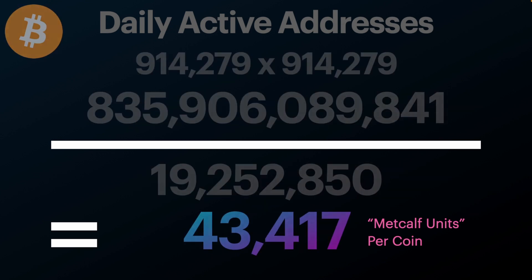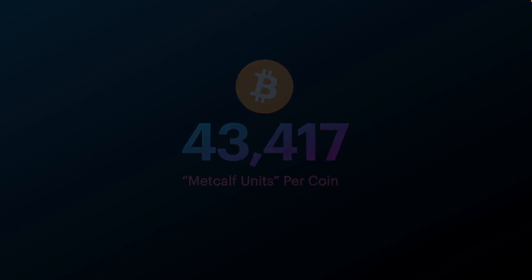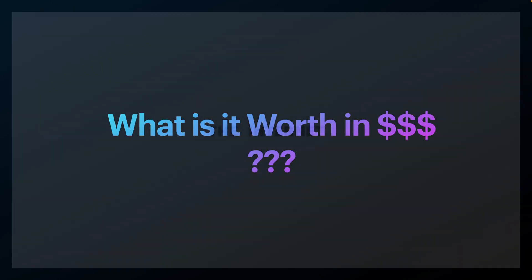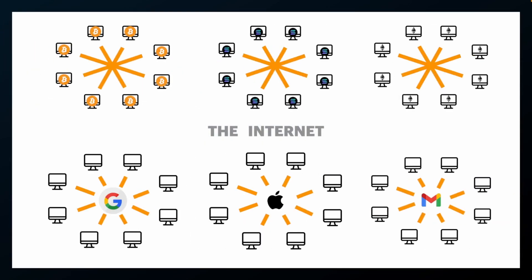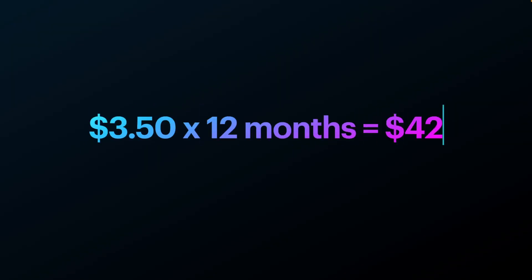Now, given that we have our Metcalf units per coin, we need to get our actual dollar value. Let's go back to the internet example — how do we value the internet today? You might say it must be based on the revenue generated from the internet, but no — what are you personally willing to pay to access the internet today? Because you do pay it: we use broadband, and the global average cost monthly for broadband is about $3.50.